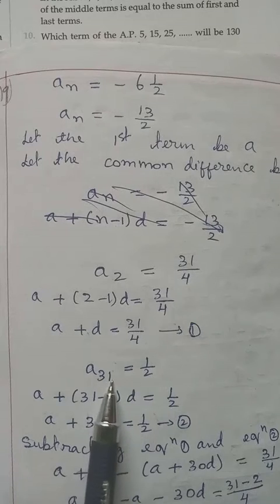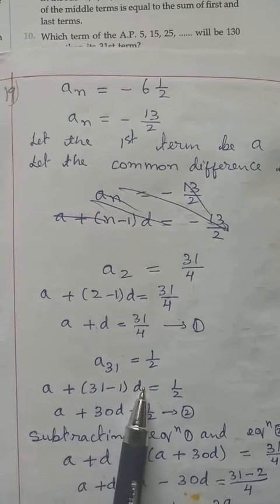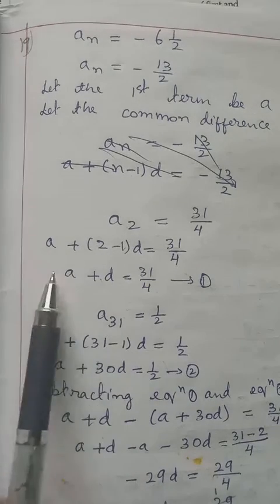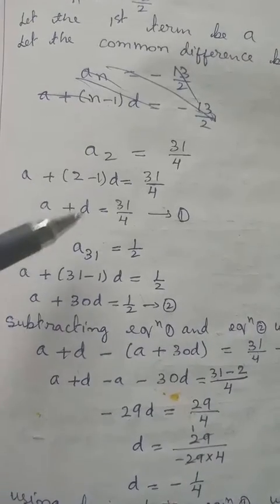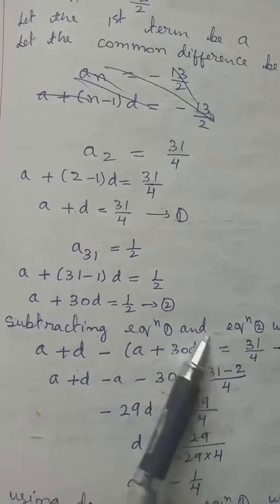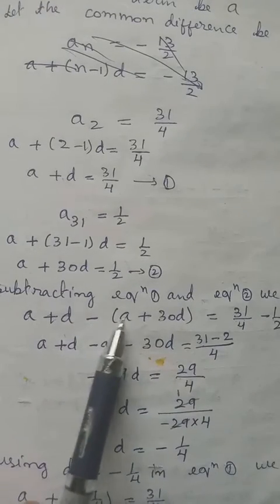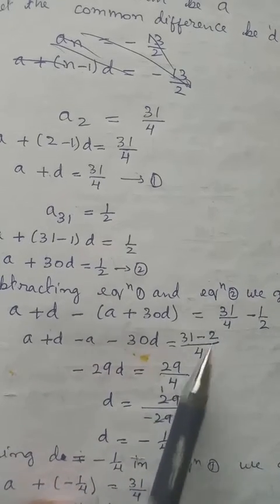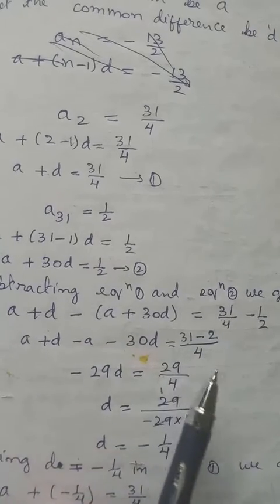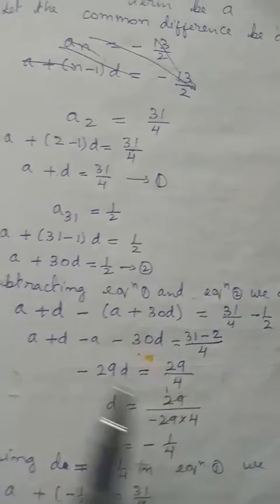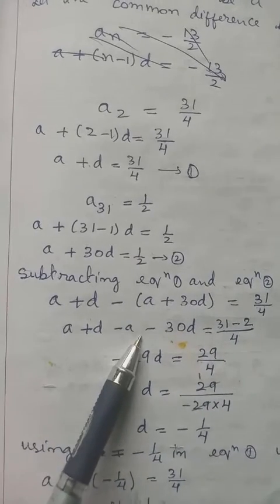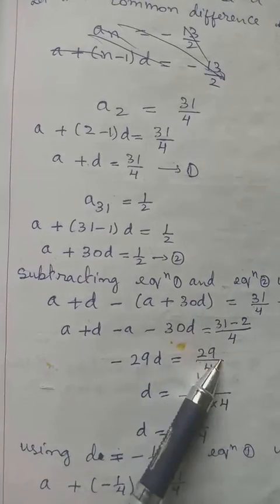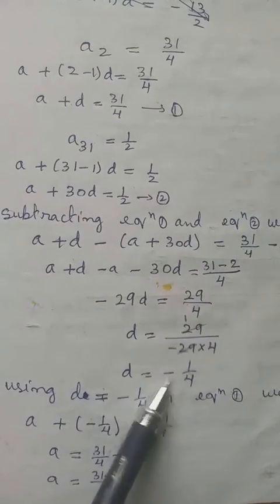We subtract equation 1 from equation 2 to eliminate a. Right side: 1/2 − 31/4. LCM of 4 and 2 is 4: (2 − 31)/4 = −29/4. Left side: 30d − d = 29d. So 29d = −29/4, giving d = −1/4.